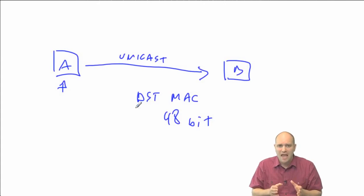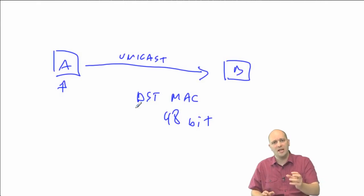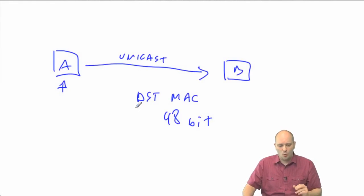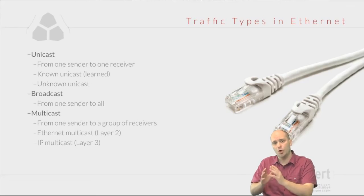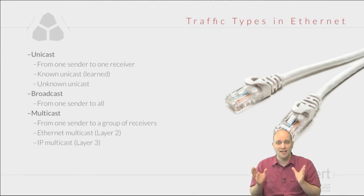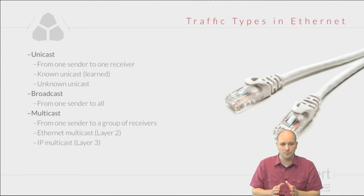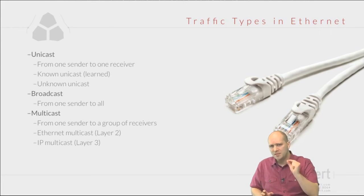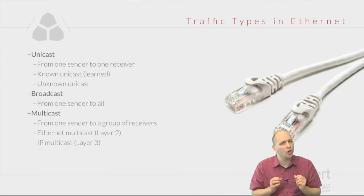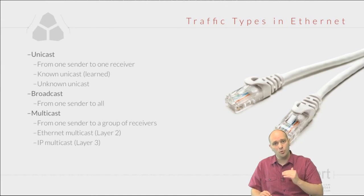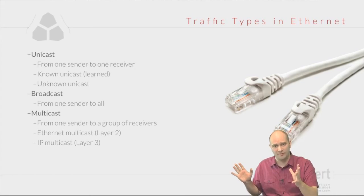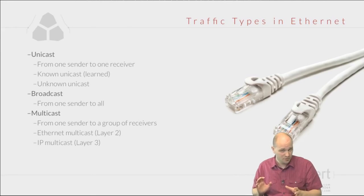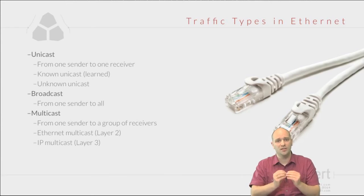When switches receive unicast traffic, they first determine whether the destination MAC address is one they know about — whether they have learned this MAC address before. If they haven't learned it, this is called unknown unicast traffic, and it is flooded by the switch. Flooding means the switch receives the frame and sends it out on all ports except the port it was received on, as long as those ports are in the same VLAN as the receiving port.